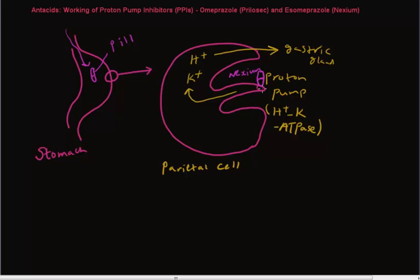It blocks the proton pump, it binds the proton pump and prevents the proton pump from releasing that much-needed potassium ion. So when there is no potassium ion released by this proton pump, there is no more H plus ion leaving that parietal cell into the gastric glands.